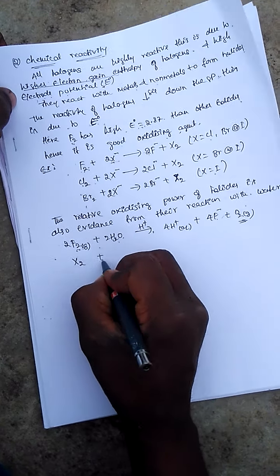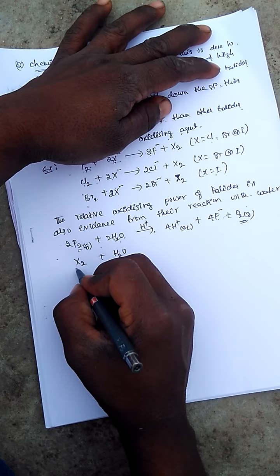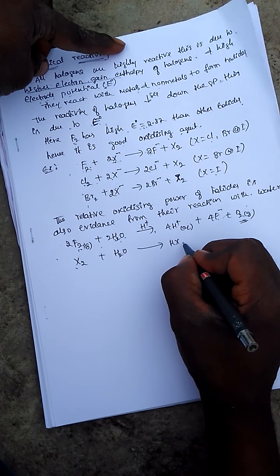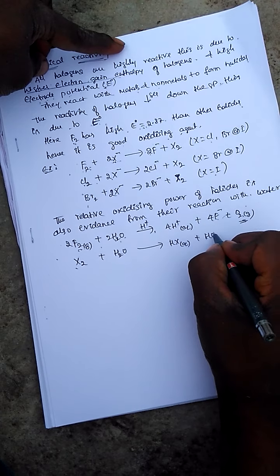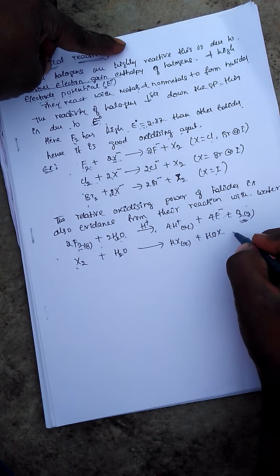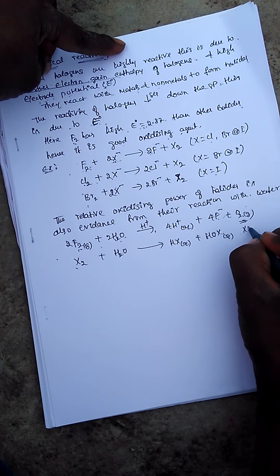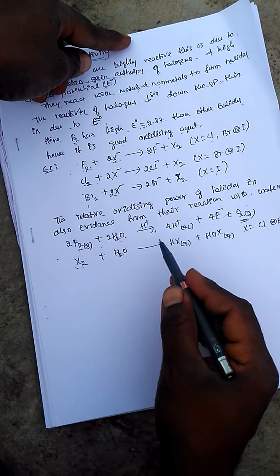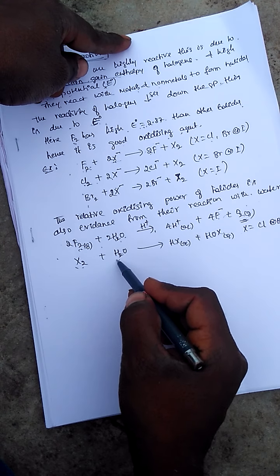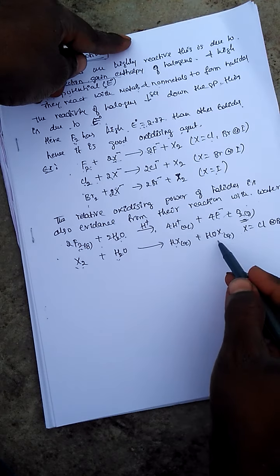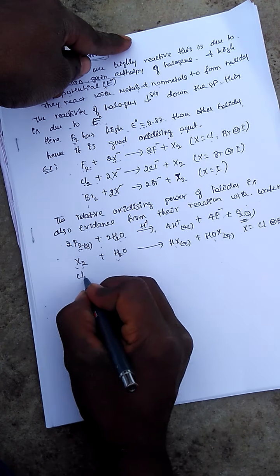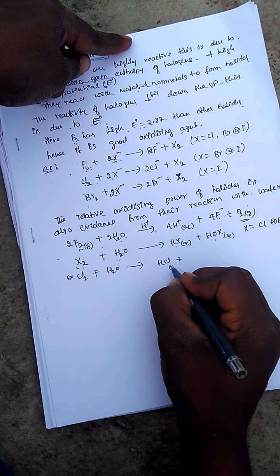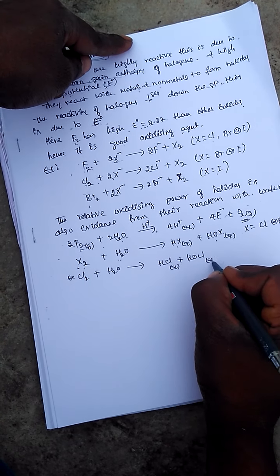For X2 halogen (where X is chlorine or bromine) reacting with water, it gives hydrogen halide and hypohalous acid. For example, Cl2 + H2O → HCl + HOCl (hypohalous acid).